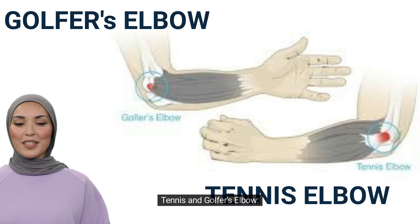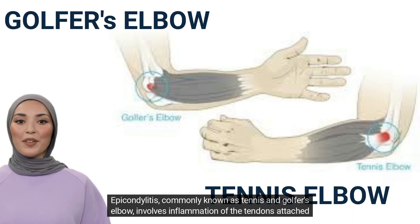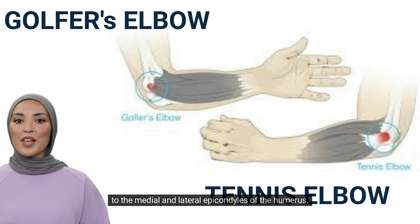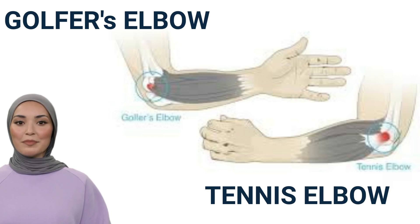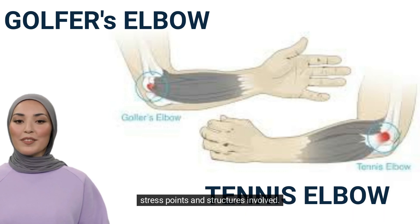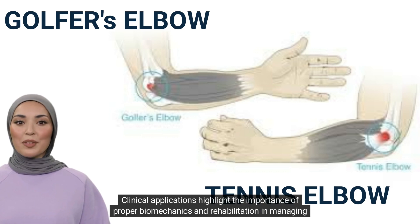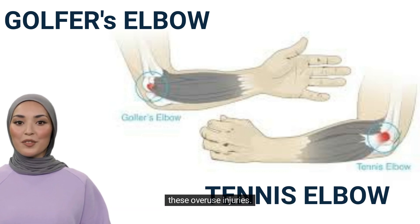Tennis and Golfer's Elbow: Epicondylitis, commonly known as tennis and golfer's elbow, involves inflammation of the tendons attached to the medial and lateral epicondyles of the humerus. Chaurasia's anatomical descriptions of the elbow region provide a foundation for understanding the stress points and structures involved. Clinical applications highlight the importance of proper biomechanics and rehabilitation in managing these overuse injuries.